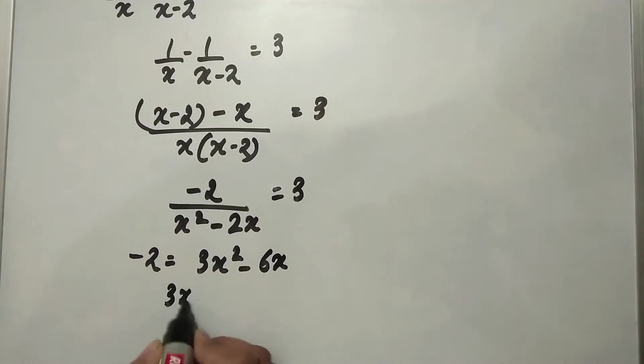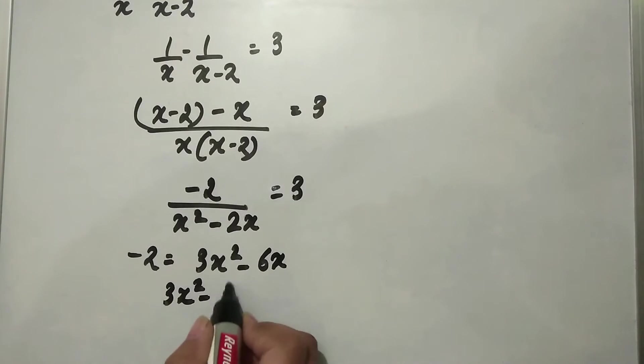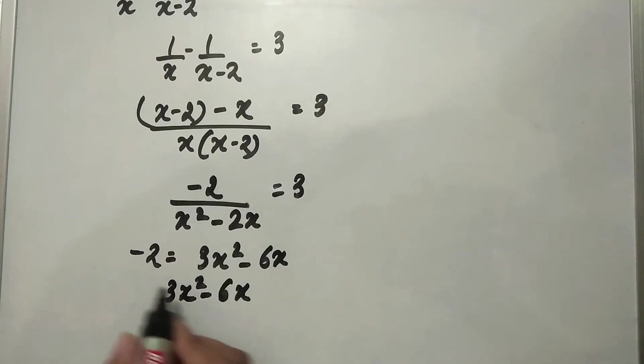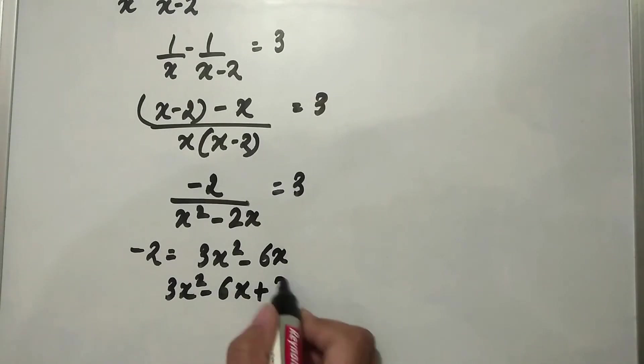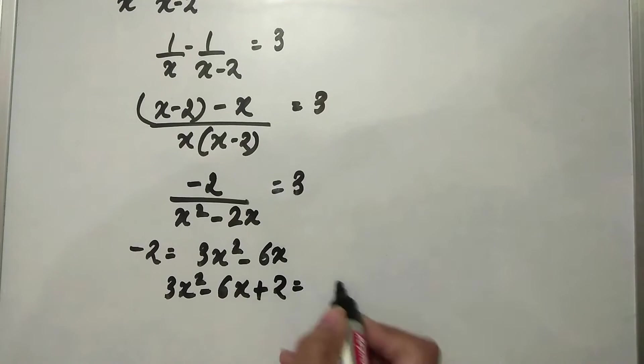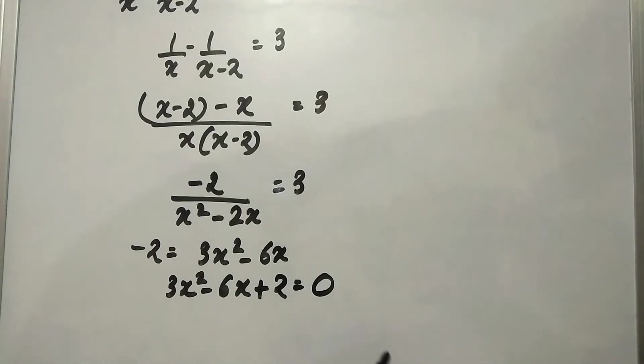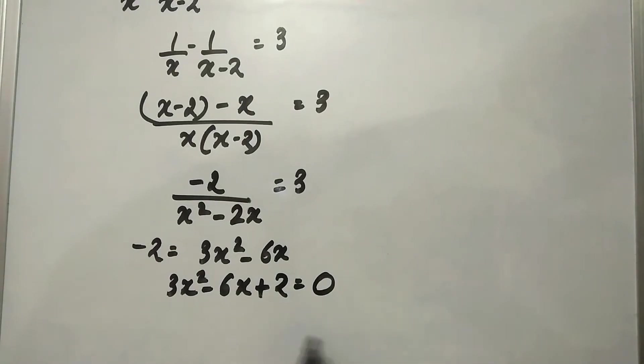We will solve this: 3x squared minus 6x, and this minus 2 will become plus 2, is equal to 0. Now we have a quadratic equation.